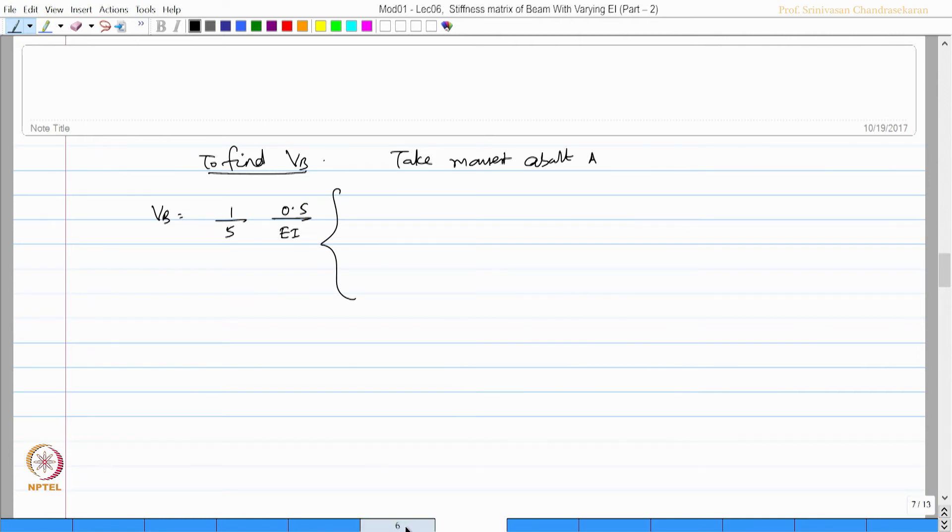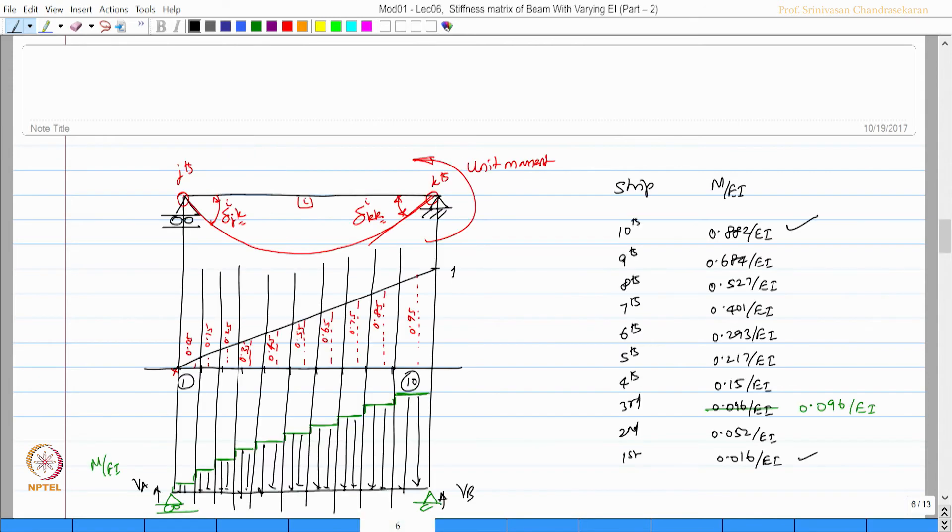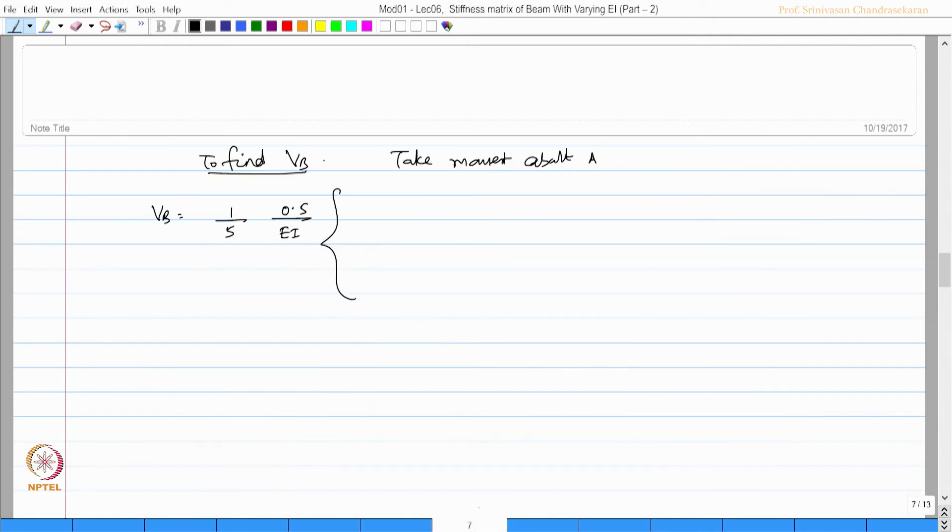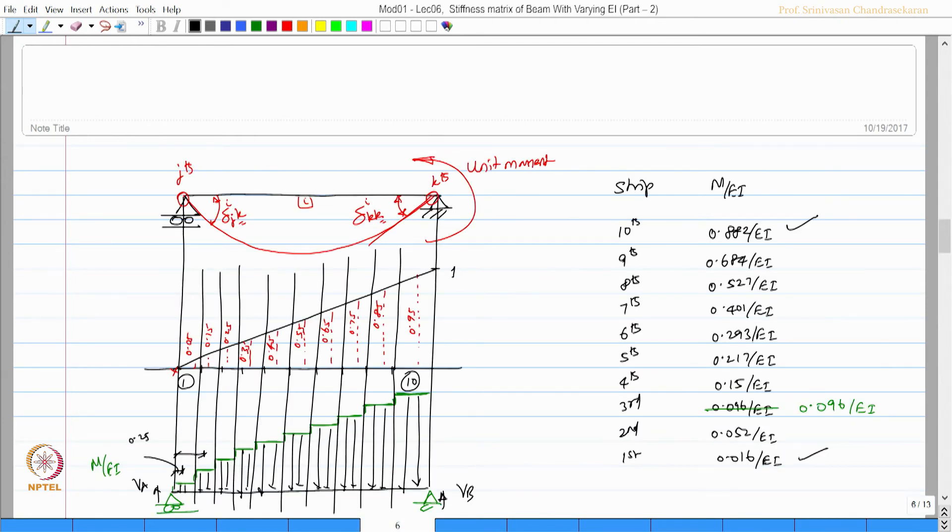So V_B will be equal to 1 by L, that is the span of the beam. 0.5 is the width of the strip. EI is common. So let us start from this value, 0.016, and that distance will be 0.25.